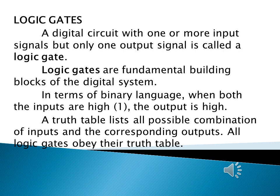In terms of binary language, when both the inputs are high, the output is also high. In order to show the condition of the input and output of a logic gate in binary form, we have to show it in a truth table. A truth table lists all the possible combinations of inputs and the corresponding outputs. All logic gates should obey the truth table.